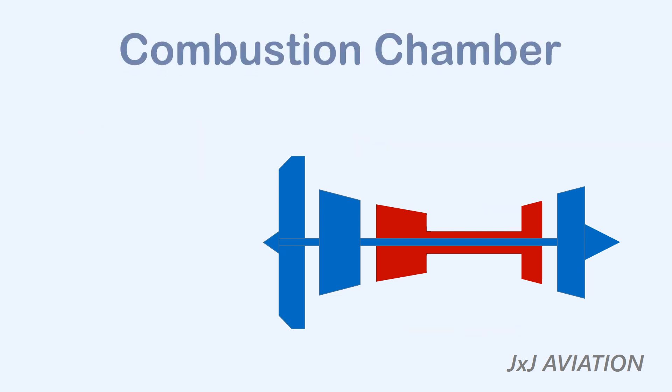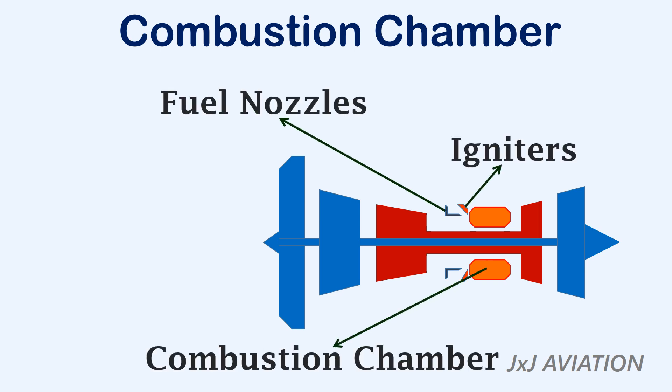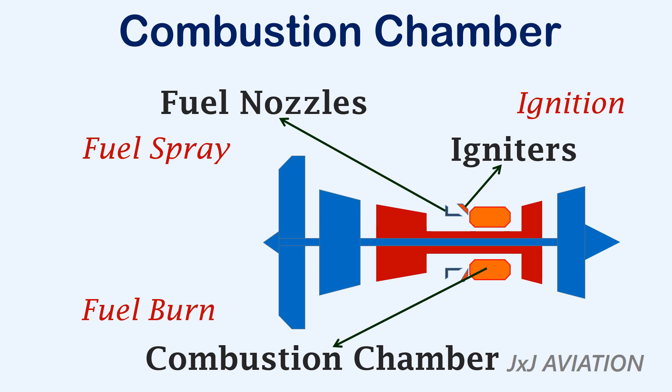The combustion chamber consists of fuel nozzles, igniters, and the combustion chamber itself. The fuel nozzle provides a spray of fuel that mixes with the air. The igniters are used to start the ignition process and can be cut off when the flame becomes self-sustaining. The burning of the fuel-air mixture takes place in the combustion chamber. There are different types: can type, annular type, and can-annular type.